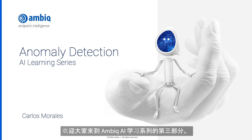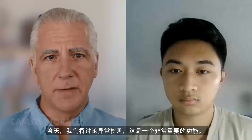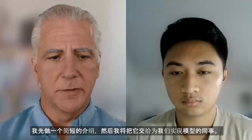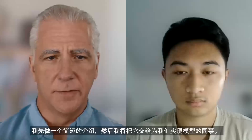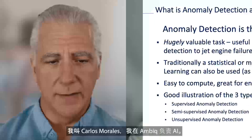Welcome, everyone, to our third installment in the AI learning series here at AMBIC. Today, we're going to talk about anomaly detection, which is a very important type of AI feature. I'll do a quick intro, and then I'll hand it over to Evan, who's the person who implemented the model for us. My name is Carlos Morales. I run AI at AMBIC.